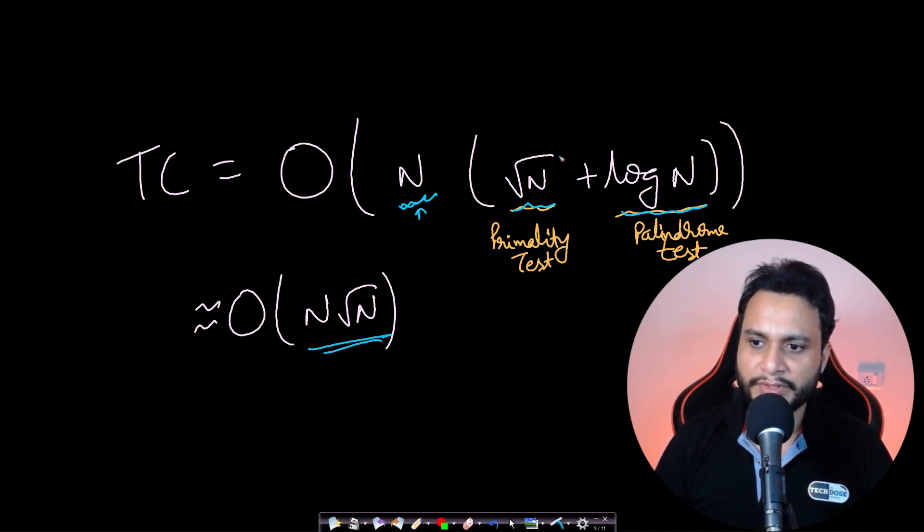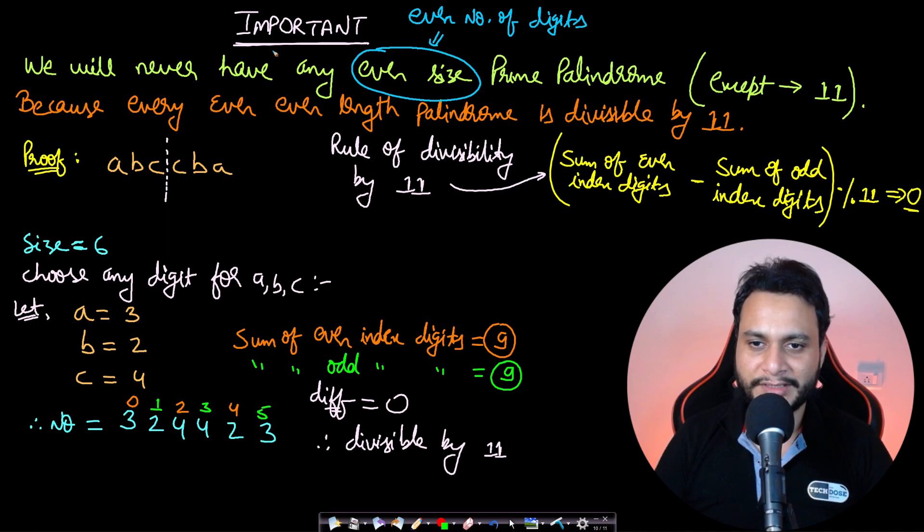The primality test takes √n time and the palindrome test takes log n time. Therefore we can conclude O(n√n) because √n is much larger compared to log n.